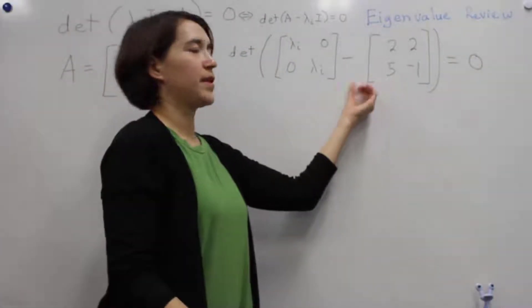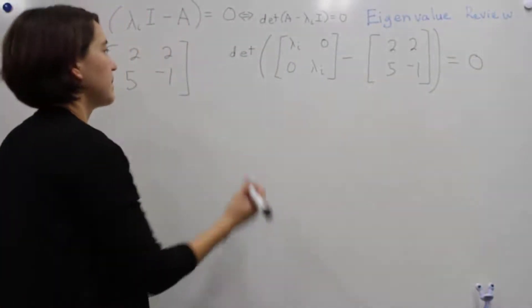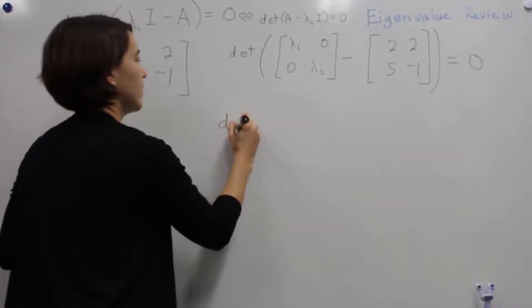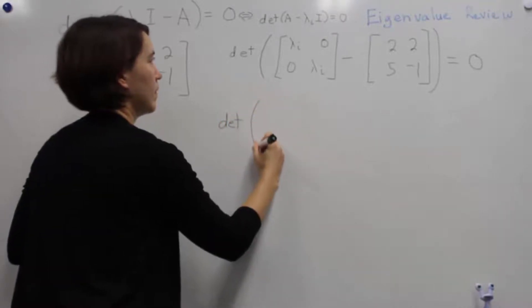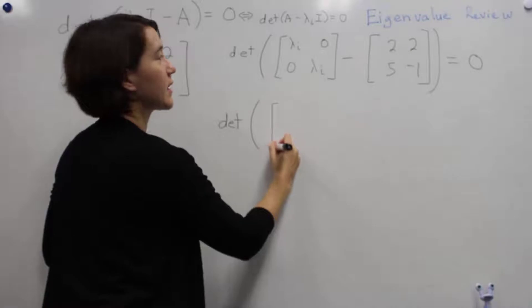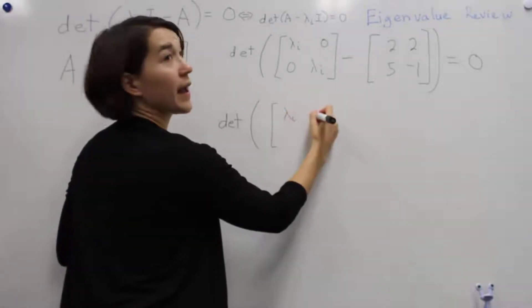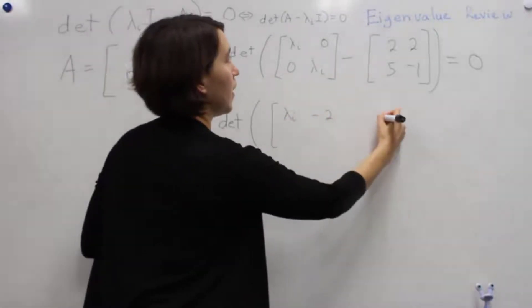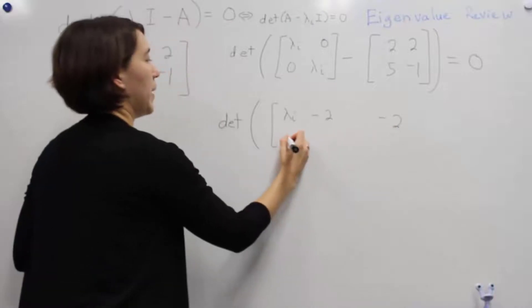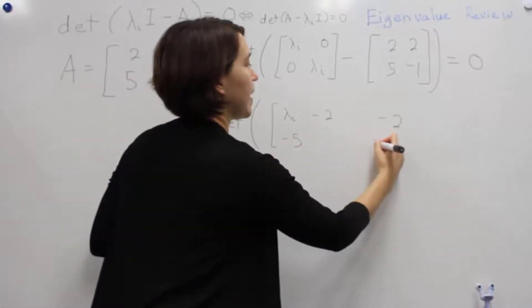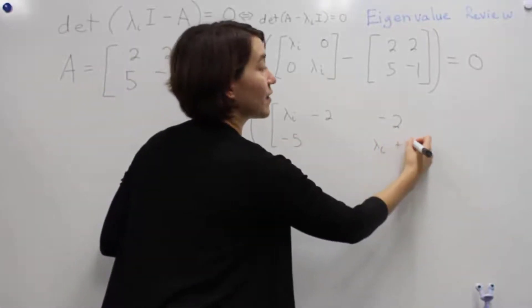We need to solve this more, so let's put these two matrices together and subtract them. We will get lambda minus 2, lambda minus 2 here, lambda minus 5 here, and lambda plus 1 here.